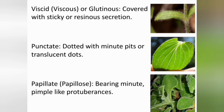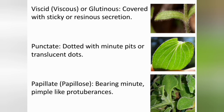Some leaf surface types include: covered with sticky or resinous secretion. Punctate leaves: dotted with minute pits or translucent dots — glowing dots. Papillate leaves, also called papillose: bearing minute pimple-like protuberances. Tuberculate or verrucose leaves: bearing tubercles or wart-like protuberances. Rugose leaves are wrinkled, typical of leaves of the mint family. Glabrous: without hairs of any kind.